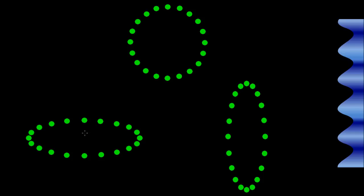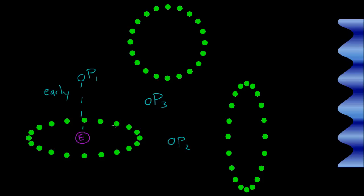Let's say on this diagram we have the Earth at the center, and we're observing three different pulsars: Pulsar 1, Pulsar 2, and Pulsar 3. At this moment, the gravitational wave is distorting space in such a way that Pulsar 1's signal seems to arrive a little bit earlier than expected. Based on the way that the gravitational wave is distorting space, Pulsar 2's signal is actually going to arrive a little bit later than expected. And if I had pulsars over here they would arrive early; if I had pulsars over here those signals would again arrive late.